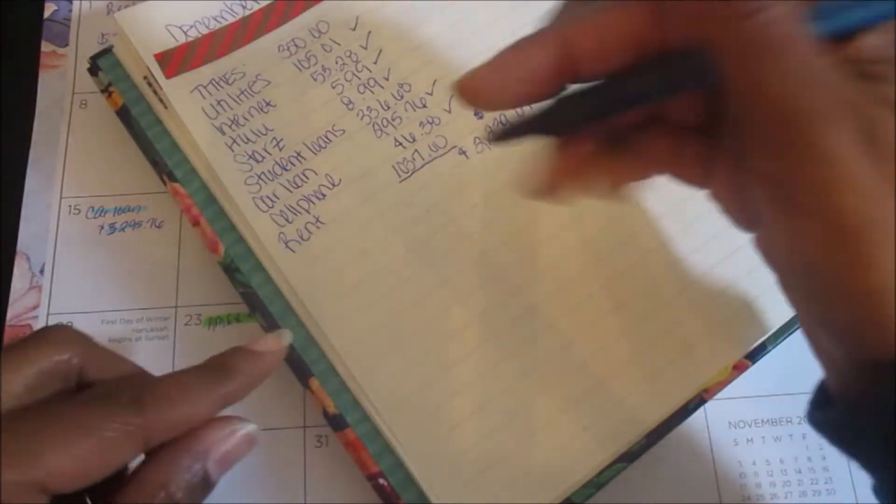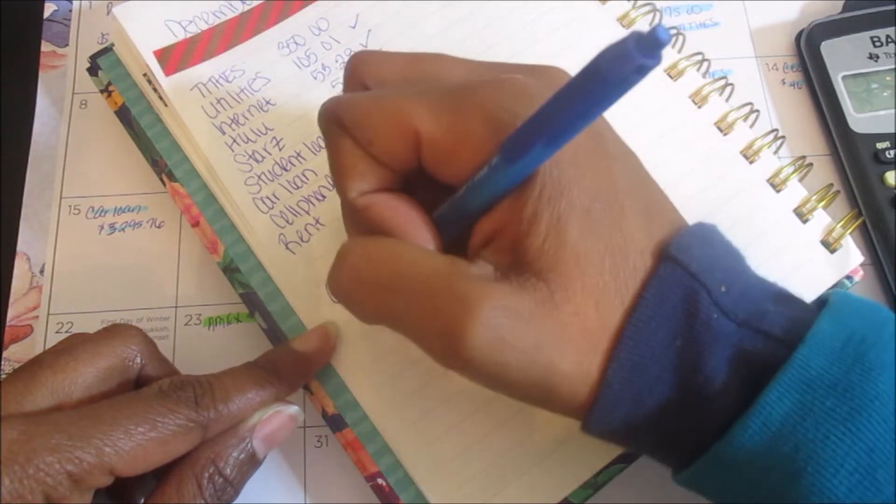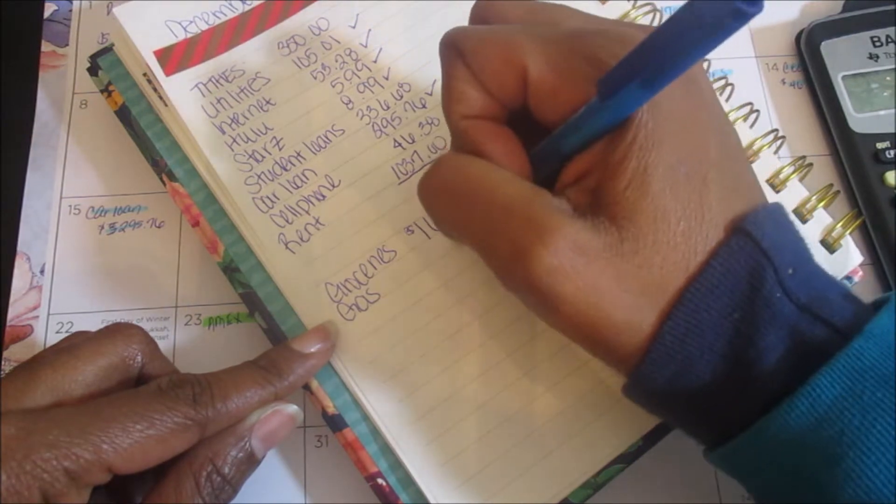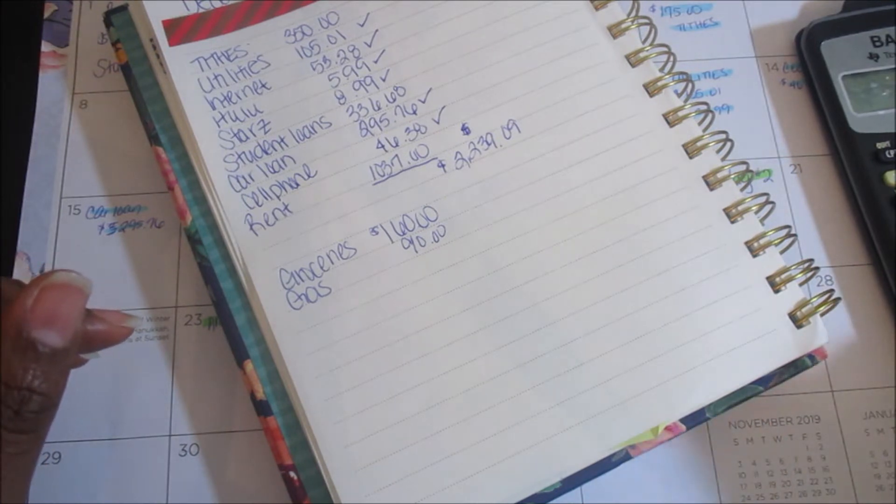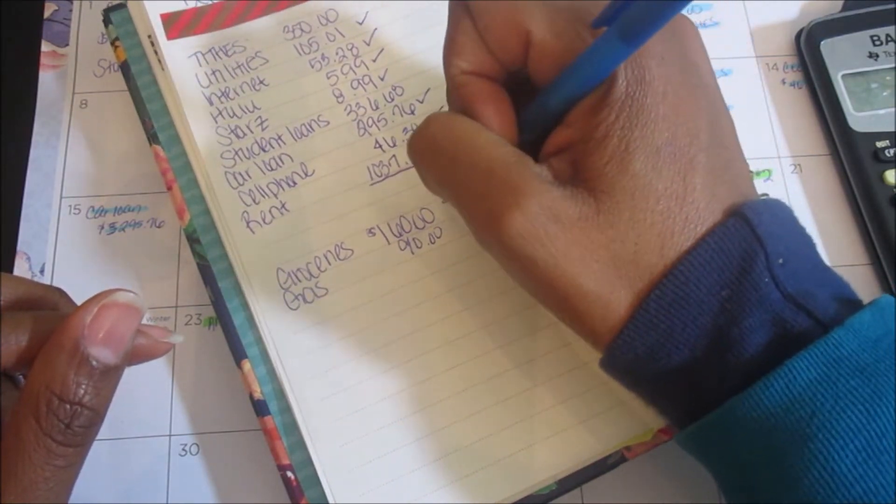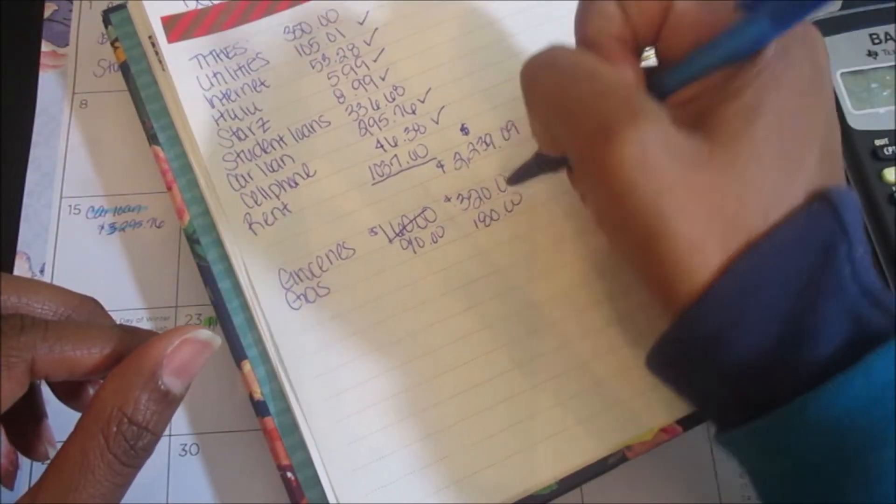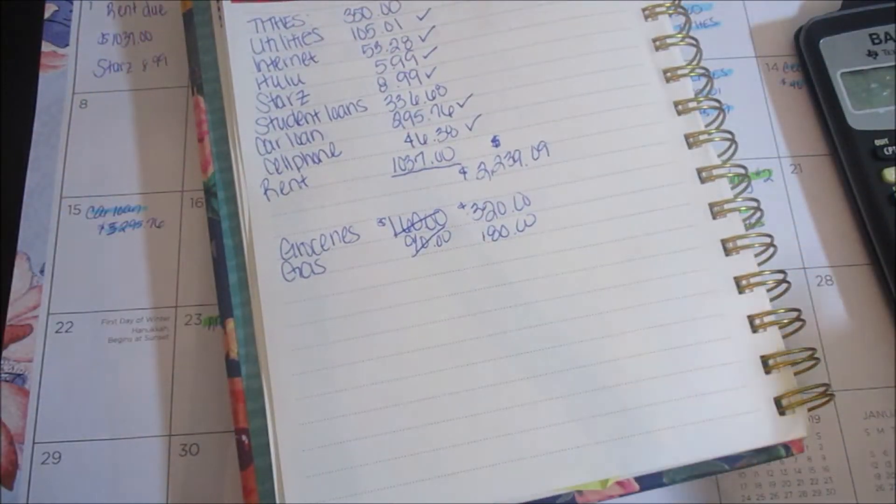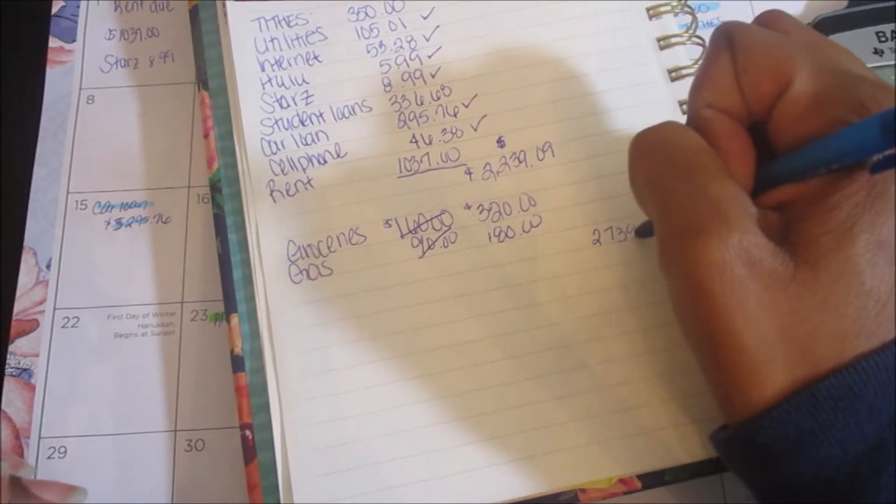For groceries I budget $80 a week which is $160—wait, I guess I need to change that for the month since I'm doing everything for the month this time. So monthly is $320 and $180 for gas for the month. So that brings my total to $2,739.09.